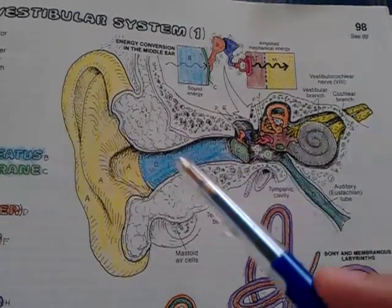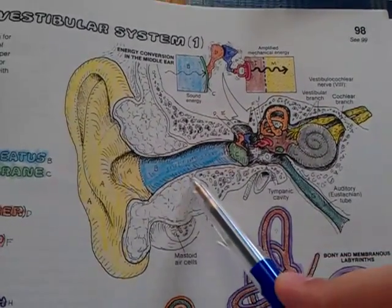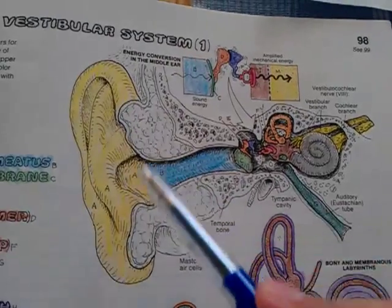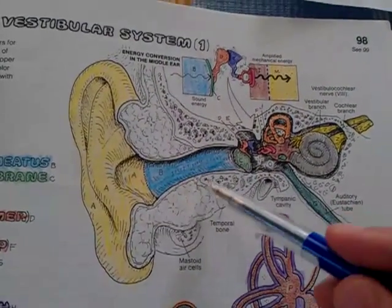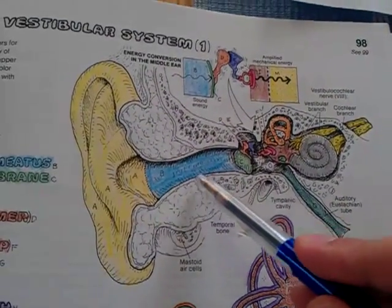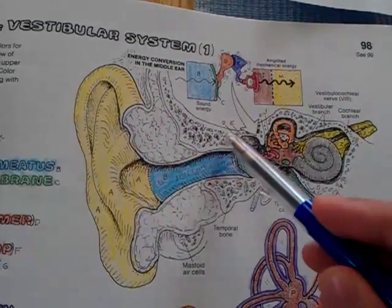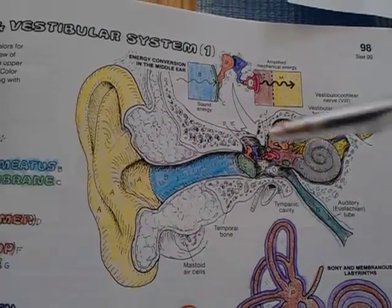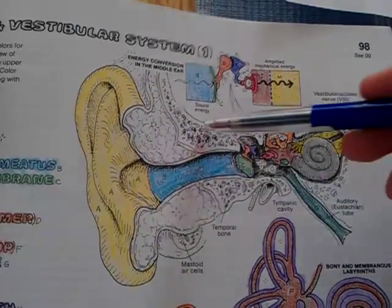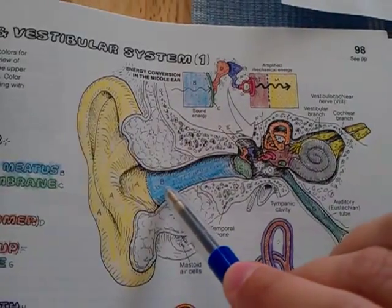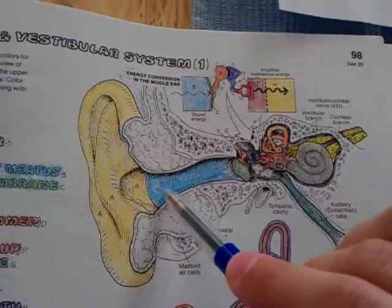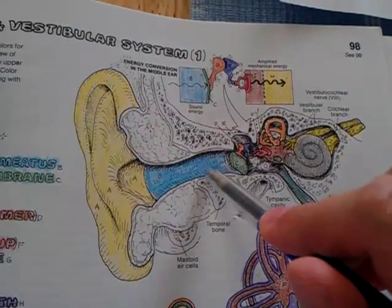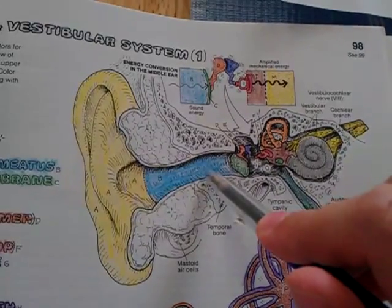You have a cartilaginous part, the outermost one-third, and the innermost two-thirds are the osseous or bony part. The cartilaginous part is approximately 8 mm, and the bony part is approximately 16 mm.